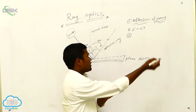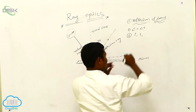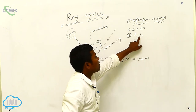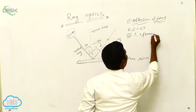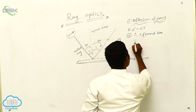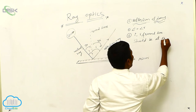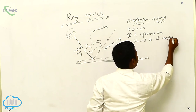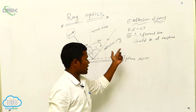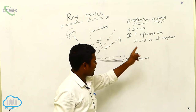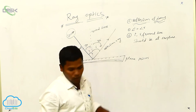The second law: the incident ray, the reflection ray, and the normal line should all be in the same plane. So these are the two laws of reflection — first, angle of incidence equals angle of reflection; second, the incident ray, reflected ray, and normal line should be at one plane.